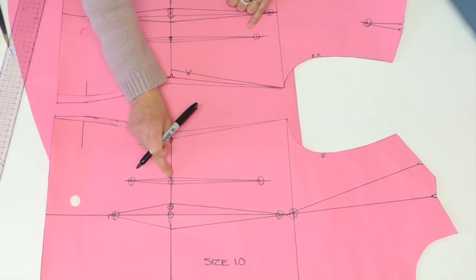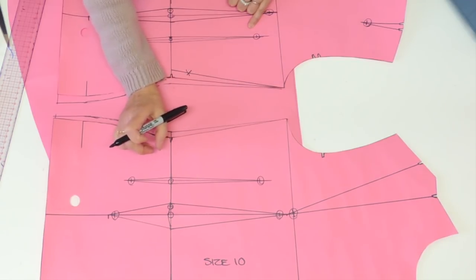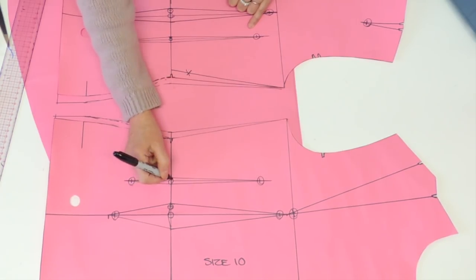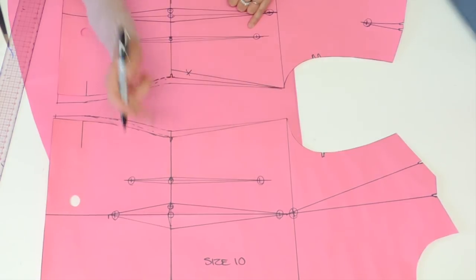For a very tiny dart like that, sometimes you just put the middle point and you go by measurement when you sew your dart. Because the punch holes will be one next to the other.